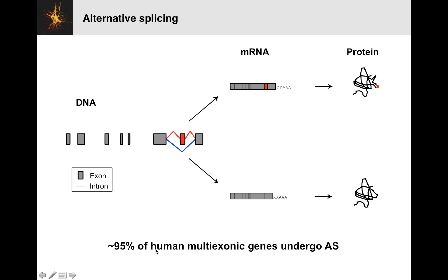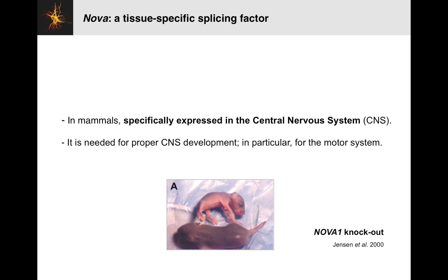This is an extremely frequent process. About 95% of human genes that have at least two exons undergo alternative splicing. It's thought to be very important in a variety of processes, including in the human brain. Today we're going to talk about NOVA, which is a tissue-specific splicing factor — something that influences alternative splicing. It's tissue-specific; it's actually only found in the central nervous system.